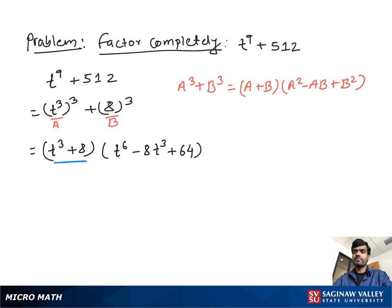So you can write this again in the form of cubes. You can write t³ + 2³ and you can write this as it is because it's going to be factored again. Now if we suppose t³ as a and 2 as b, then...